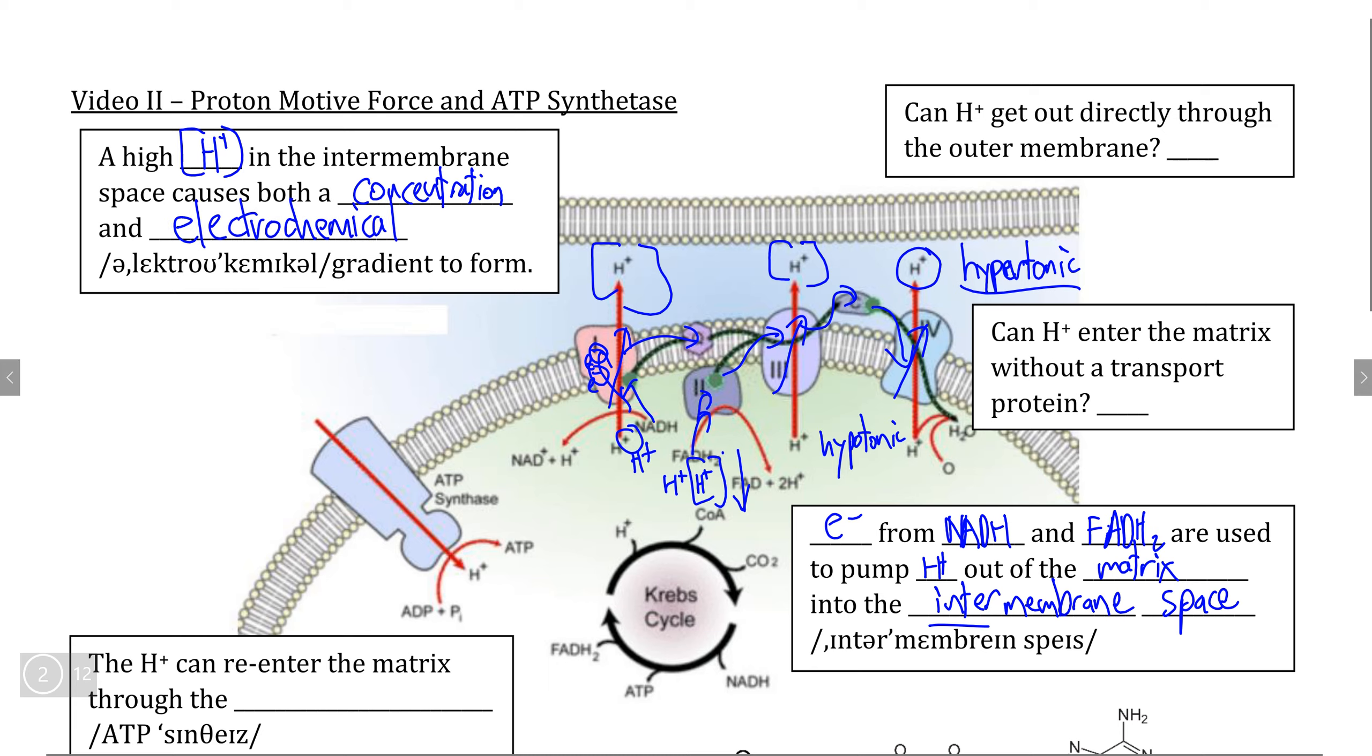The fact that we are pumping H plus into the intermembrane space means that we are increasing the amount of positive charge in the intermembrane space. And as the amount of positive charge in the matrix decreases, conversely, we are making the inside of the matrix more negative.